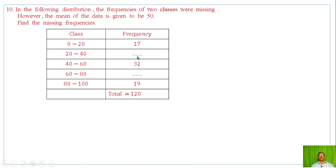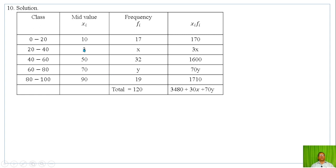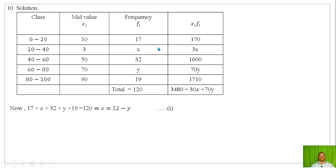There are two unknown missing frequencies, x and y. Setting up the equation: 17 + x + 32 + y + 19 = 120, which gives the first equation relating x and y. Using the given mean of 50, we set up a second equation from the mean formula: (1/120) × (sum of frequency × midpoint) = 50, giving a second equation to solve for x and y.